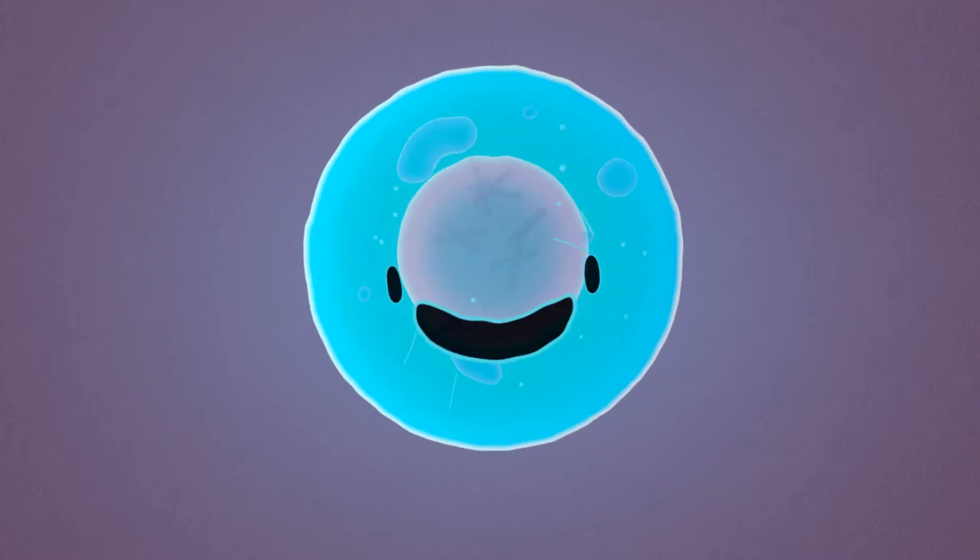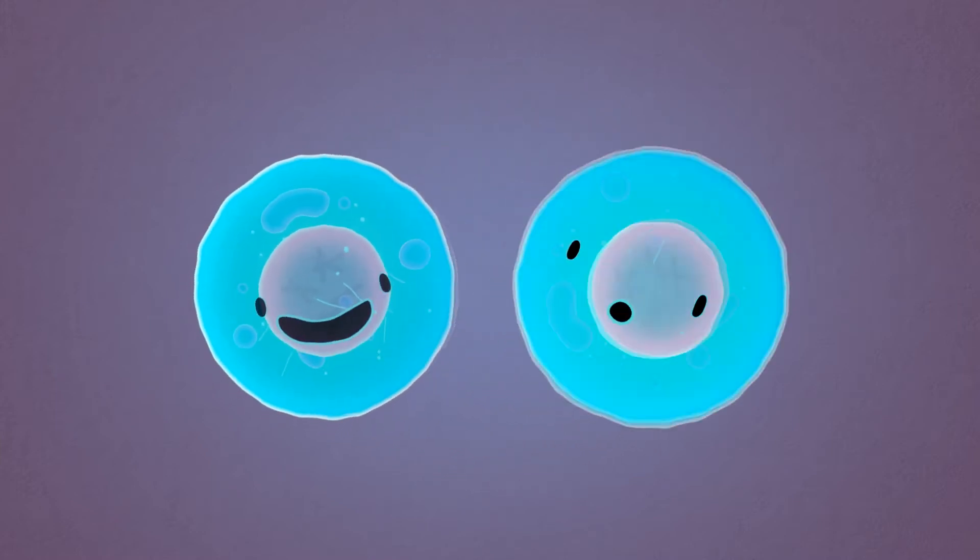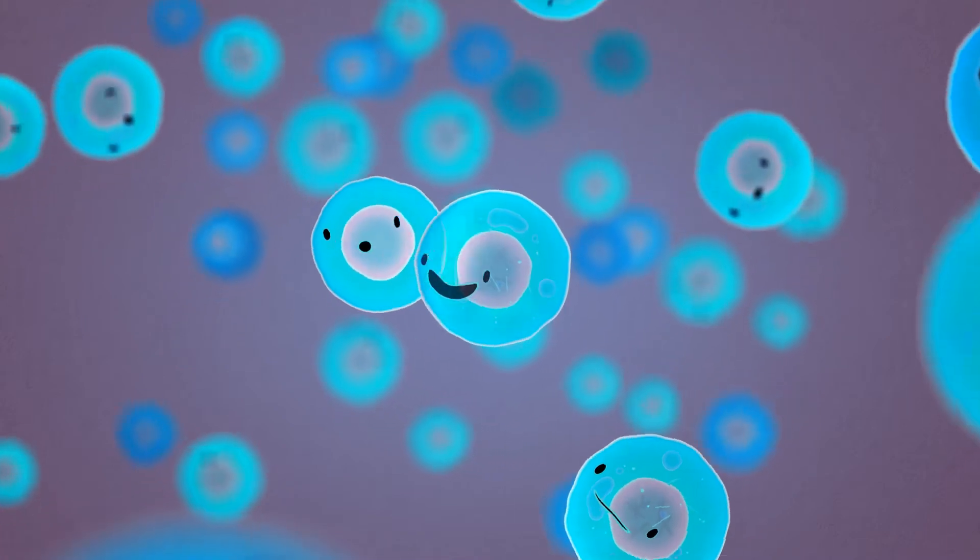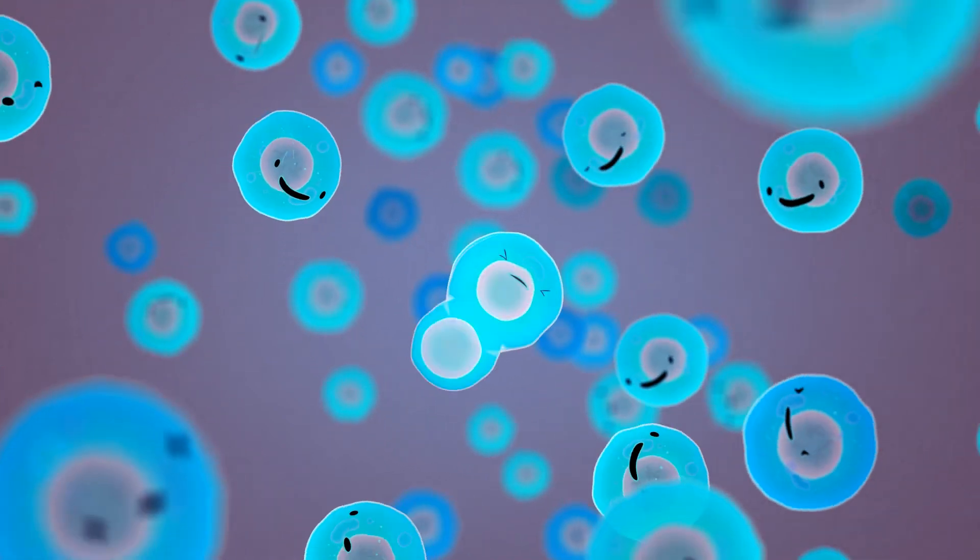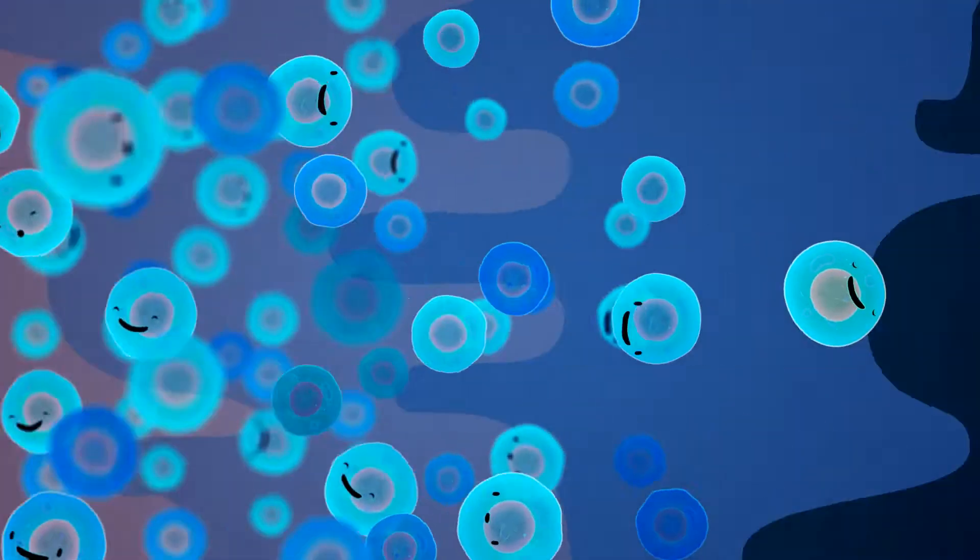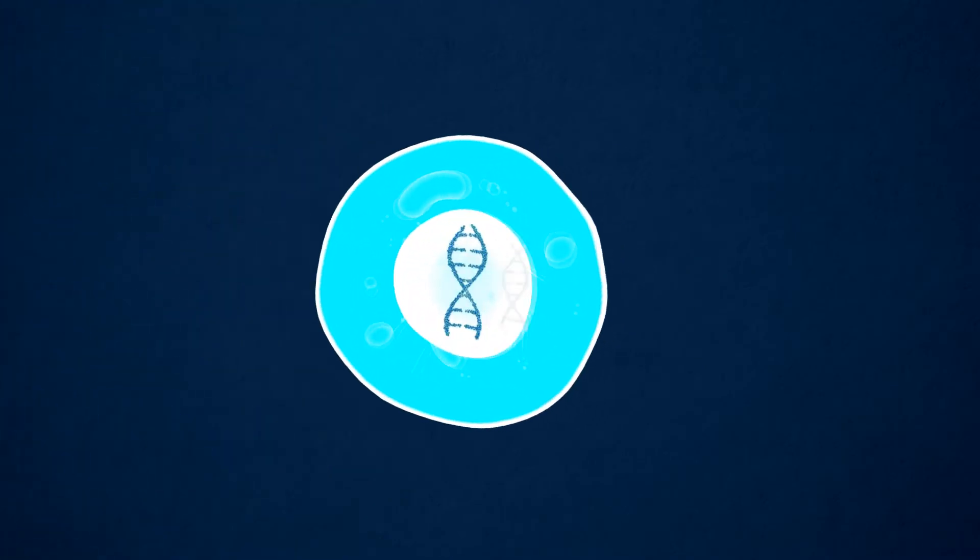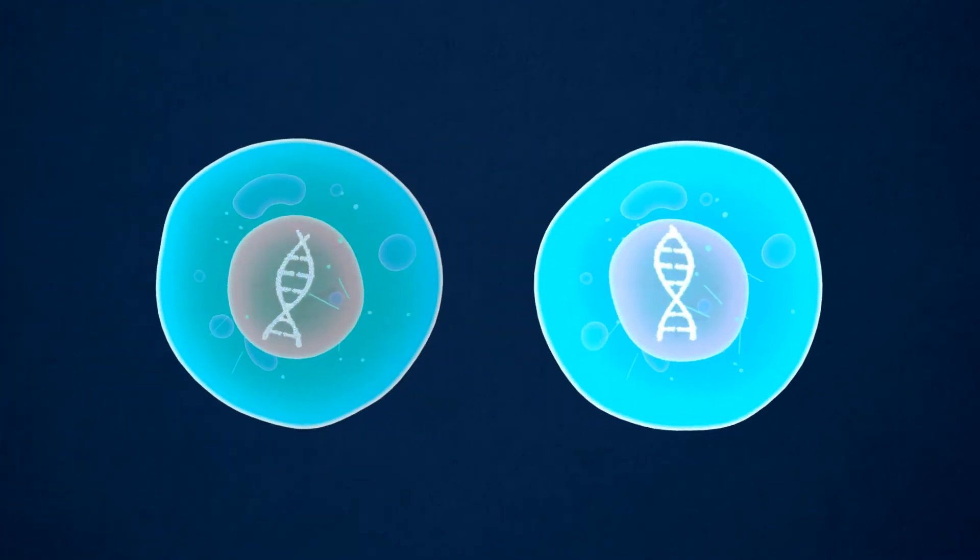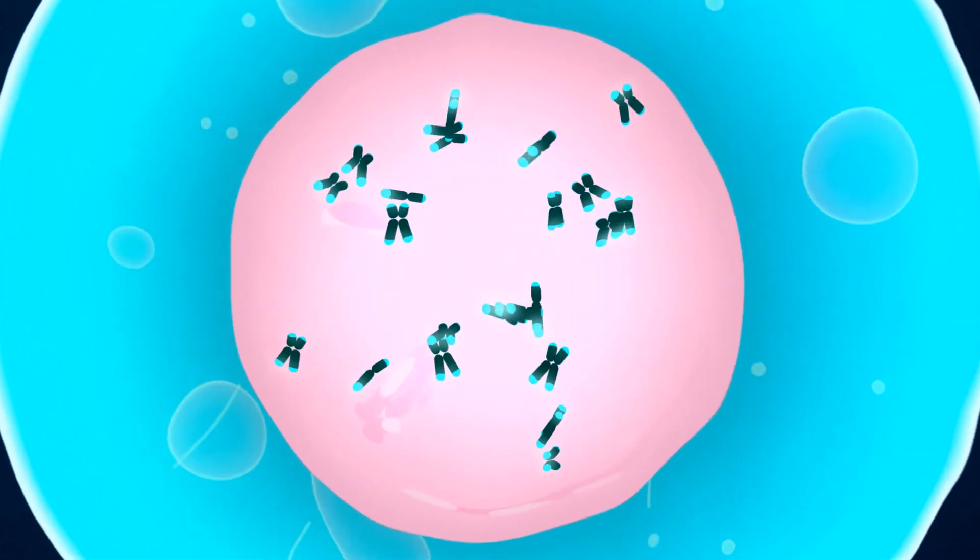We all start as a single cell that divides and divides and divides. An average human lives through 10 quadrillion cell divisions, and in every division the cells need to copy the DNA blueprint composed of 46 chromosomes.